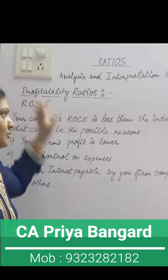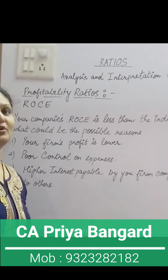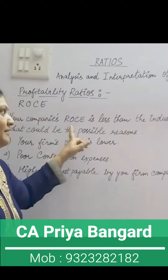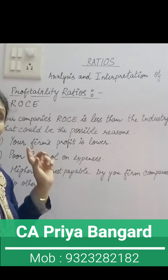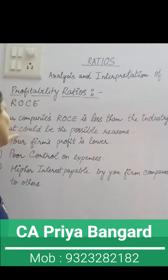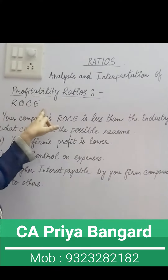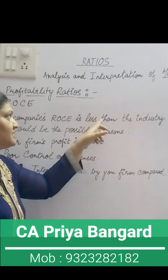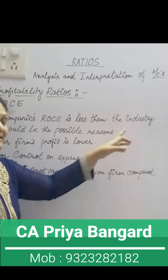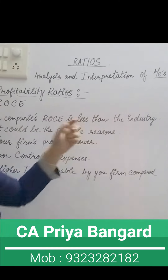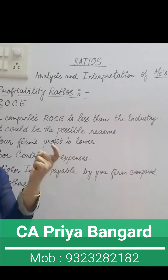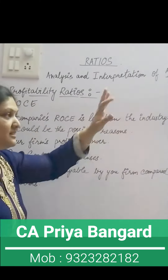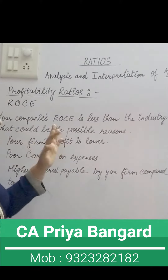Children, once you understand it, you are also supposed to learn it word by word — you should know the keywords, then only you will get marks. So for ROCE, your company's ROCE is less than the industry. In the industry you are just a single firm, so your ROCE is less than the industry. What could be the possible reasons that your ROCE is lesser than the industry?